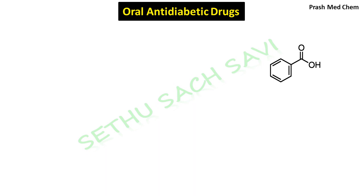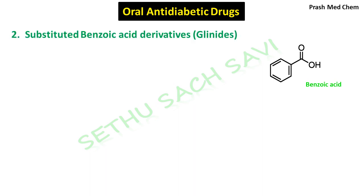Now we move to the second class of drugs under insulin secretagogues. Can you identify this compound? This is benzoic acid, where a carboxyl group is attached to a benzene ring. Some substituted benzoic acid derivatives show anti-hyperglycemic activity by increasing insulin secretion, and they are called the glinide group of drugs. Examples are repaglinide, nateglinide, and meglitinide.